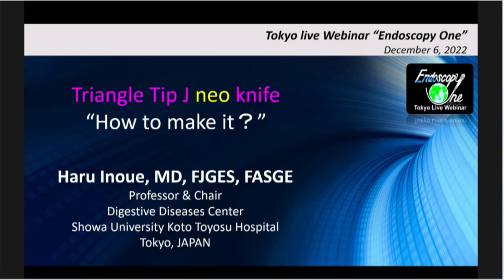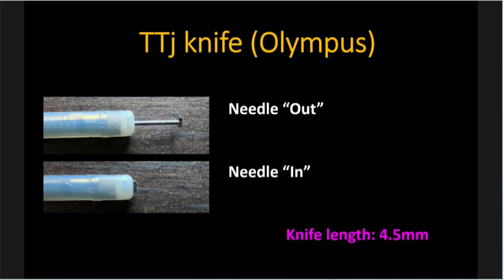Our next topic is the knife. We now have the triangle tip jet knife — TTJ. We would like to arrange it a little bit for the TTJ. The commercially available TTJ knife has a 4.5mm knife ring, the same as a hook knife. If we use this knife in a hook style, it works well. But we cannot use this knife like a dual knife — placing the tip on the mucosa surface and cutting.